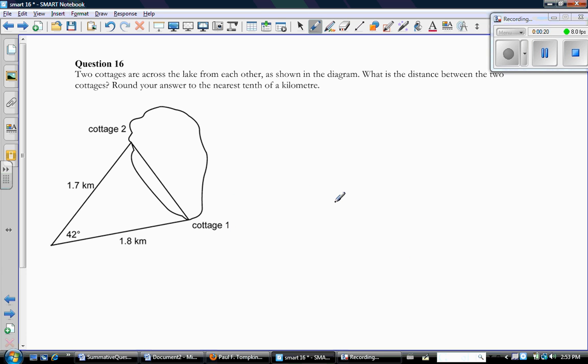So, question 16. Two cottages are across the lake from each other, as shown in the diagram. What is the distance between the two cottages? Round your answer to the nearest tenth of a kilometer.